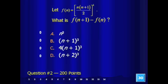All right, for 200 points, we'll let f of n equal the quantity n times n plus 1 over 2, that quantity squared — so those brackets are just a grouping symbol there. What is f of n plus 1 minus f of n?